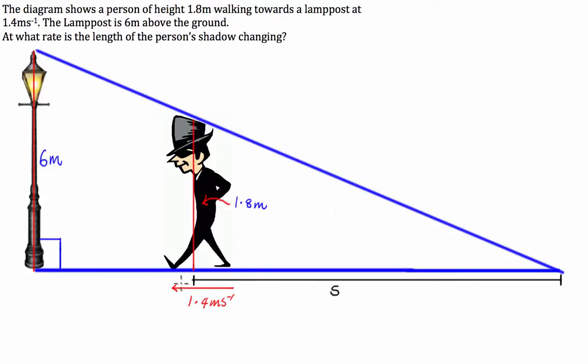And I'm also going to call the distance between the guy who's walking and the lamppost, I'm going to denote that x. So this distance here I'm going to denote x.